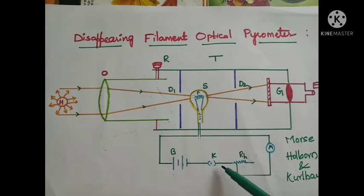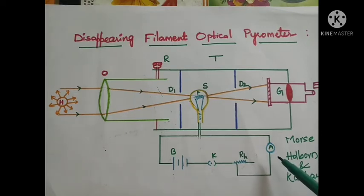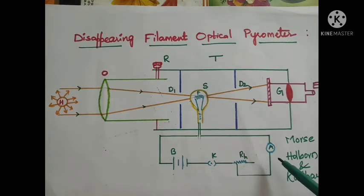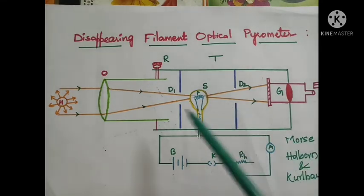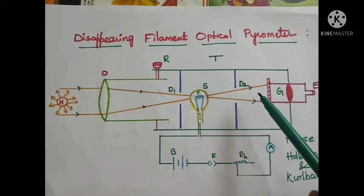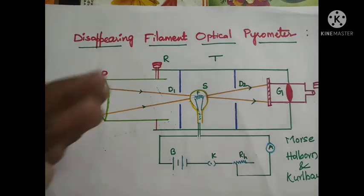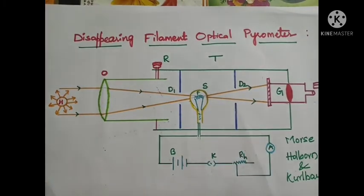The filament F of the lamp is connected to a battery, a key, and a rheostat. With the help of the rheostat, we can vary the current flowing through the bulb, and with the help of an ammeter we can measure the current flowing in the circuit. I am also using D1 and D2, where D1 and D2 are diaphragms which limit the cone of radiation entering the telescope.